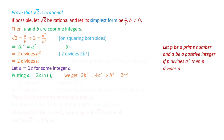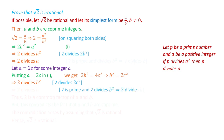Now, b squared equals 2c squared. The term 2c squared is divisible by 2, which means b squared is divisible by 2. So 2 divides b squared. Again, since 2 is a prime number and 2 divides b squared, by the lemma this implies that 2 divides b.